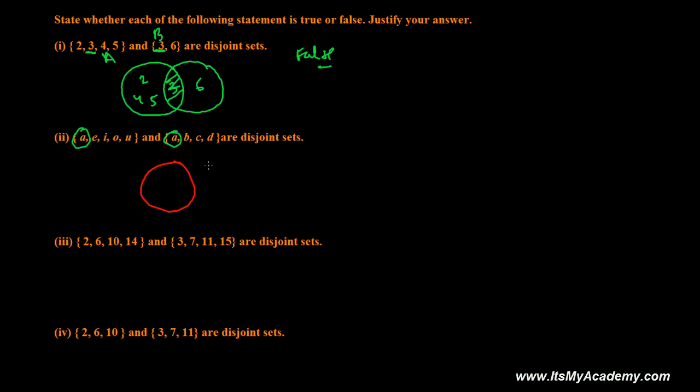If you see the Venn diagram of this, A is here, and E, I, O, U will be here, and then B, C, D. This is the Venn diagram. Since there is something common, this A is common between both, so it's not Disjoint Sets.